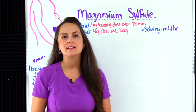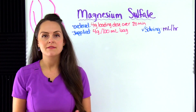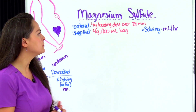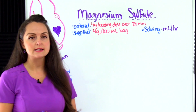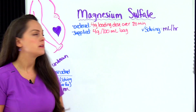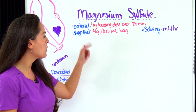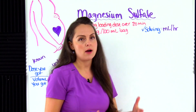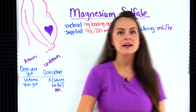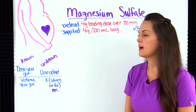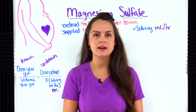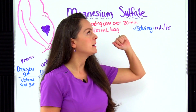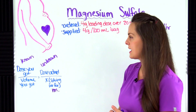Our problem says that we have a patient with eclampsia ordered to start IV magnesium sulfate. The healthcare provider has ordered a four gram loading dose over 20 minutes, and you're supplied with a bag of IV mag that says four grams per 100 mL. What you need to figure out is the milliliters per hour. If you prefer a different method like dimensional analysis or desired over half, I have videos that show those methods instead.